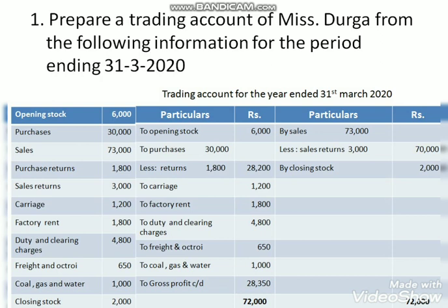Problem: Prepare a trading account of Ms. Durga from the following information for the period ending 31st, 2020. Opening stock: 6,000; Purchases: 30,000; Sales: 73,000; Purchase returns: 1,800; Sales returns: 3,000; Carriage: 1,200; Factory rent: 1,800; Duty and clearing charges: 4,800; Freight and octroi: 650; Coal, gas and water: 1,000; Closing stock: 2,000.